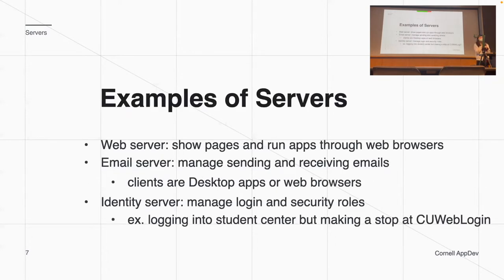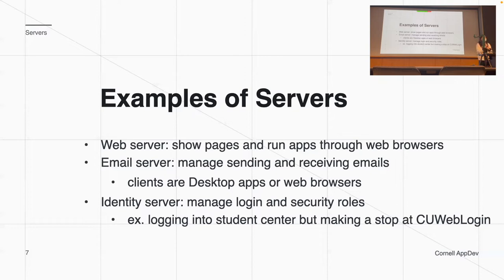There are a couple of different types of servers. Web servers show pages and run apps through web browsers — for example, your client would be Google Chrome. Email servers manage your emails, like Gmail, where the client is the gmail.com website or the mail app on iOS. We also have identity servers, which handle authentication and manage login security roles. An example is when we log into Student Center and are prompted by CUWebLogin to enter our ID and password.